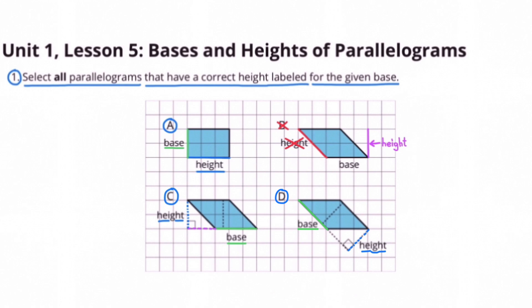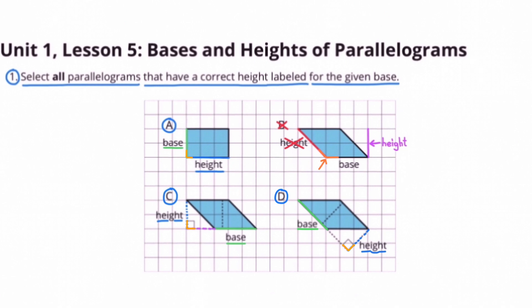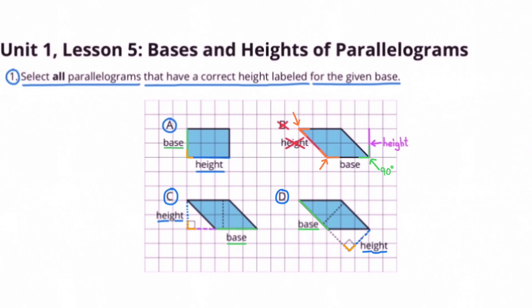For figures A, C, and D, I'll highlight the 90 degree angle in yellow. And for figure B, I'll highlight the angles in orange — you'll see that one angle is greater than 90 degrees and another is less than 90 degrees. In purple, I've added the correct line for height, which you can see is at 90 degrees compared to the base.